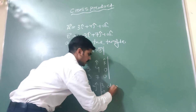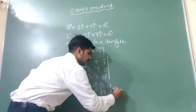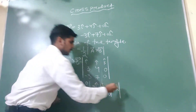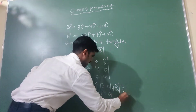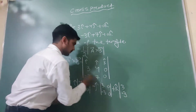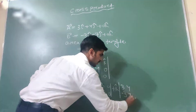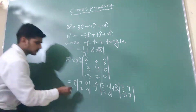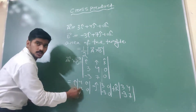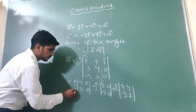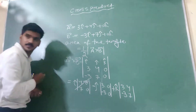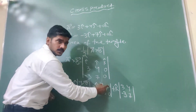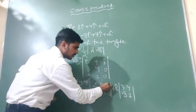Now take K cap — plus K cap — values are 3, minus 3 and 4. This part will be zero: four into zero is zero, seven into zero is zero. That part is also zero: three into zero is zero, minus three into zero is zero.